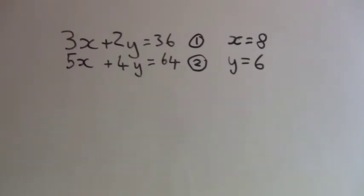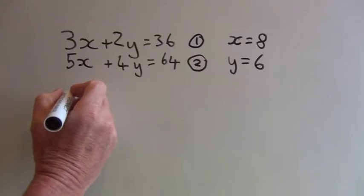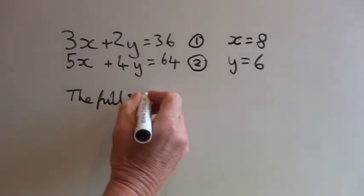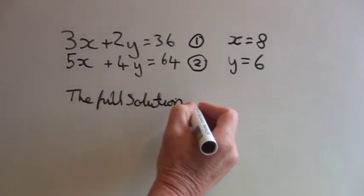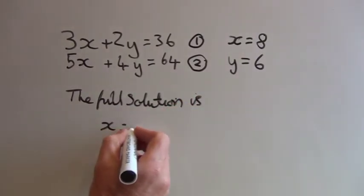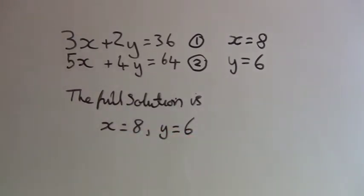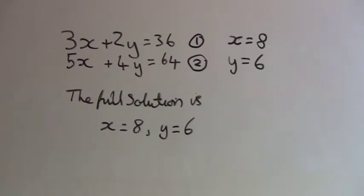So the only thing left to do is to write the solution. The full solution is x equals 8, y equals 6. Now the idea behind this method is to multiply one or both equations by a suitable number so that either the number of y's or the number of x's are the same, so that the subtraction eliminates that unknown. It may also be possible to eliminate an unknown by addition, and we'll have a look at that in the next example.